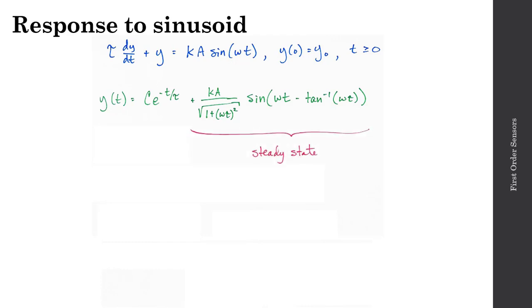This magnitude and the sine term make up the steady-state component of my time response. And the exponential term, c times e to the minus t over tau, makes up the transient component. The value of c will be dependent on my initial condition.